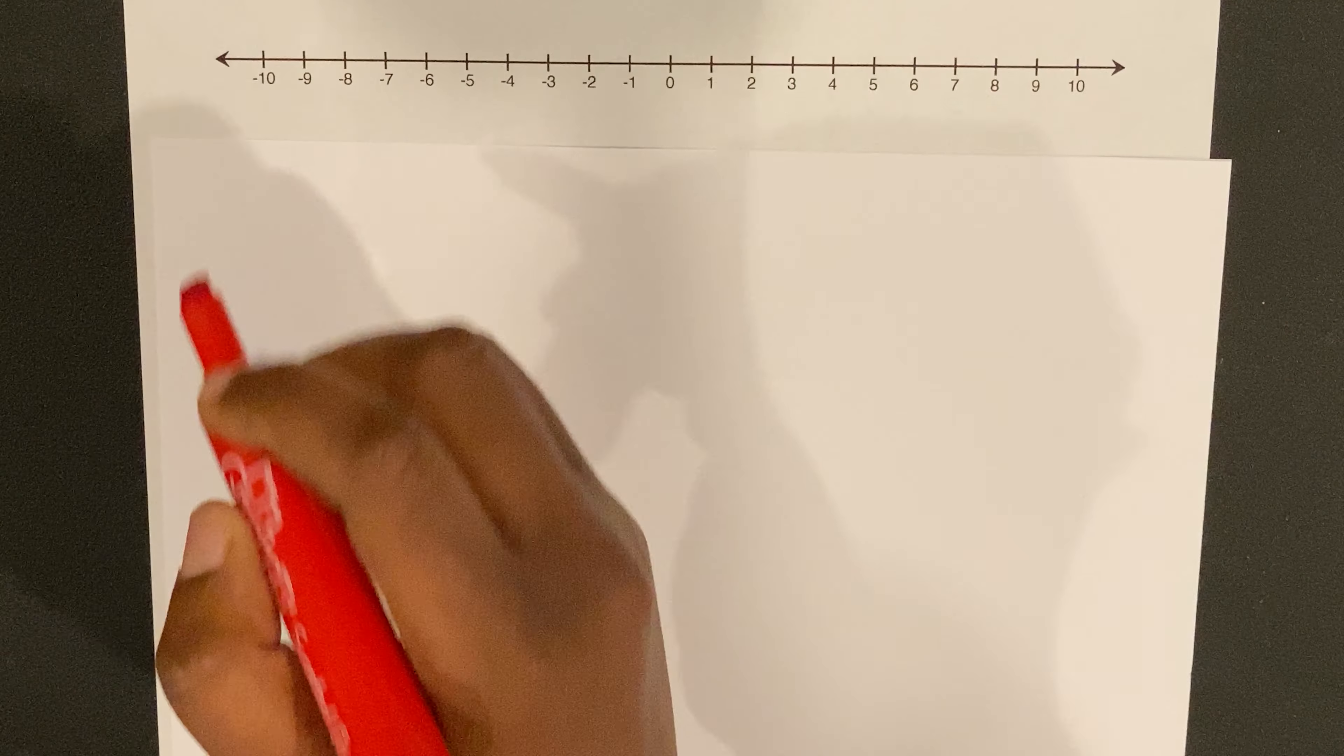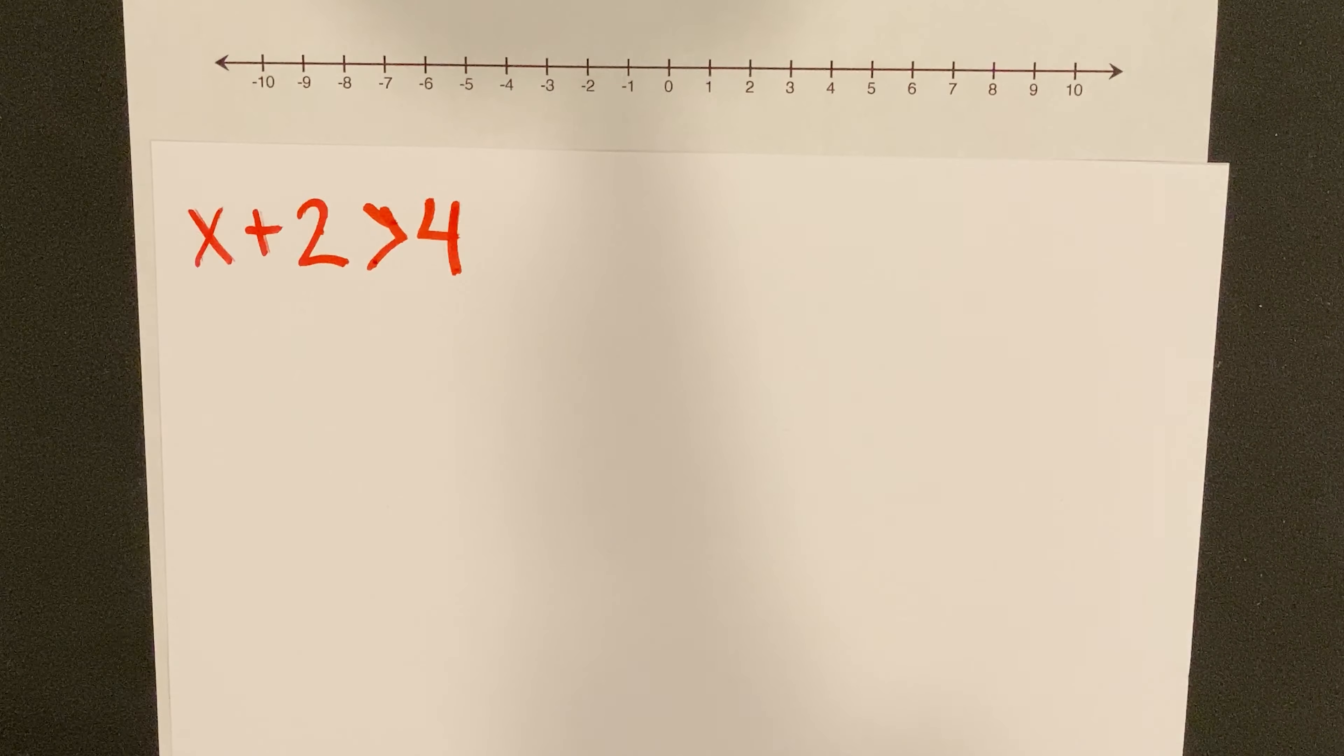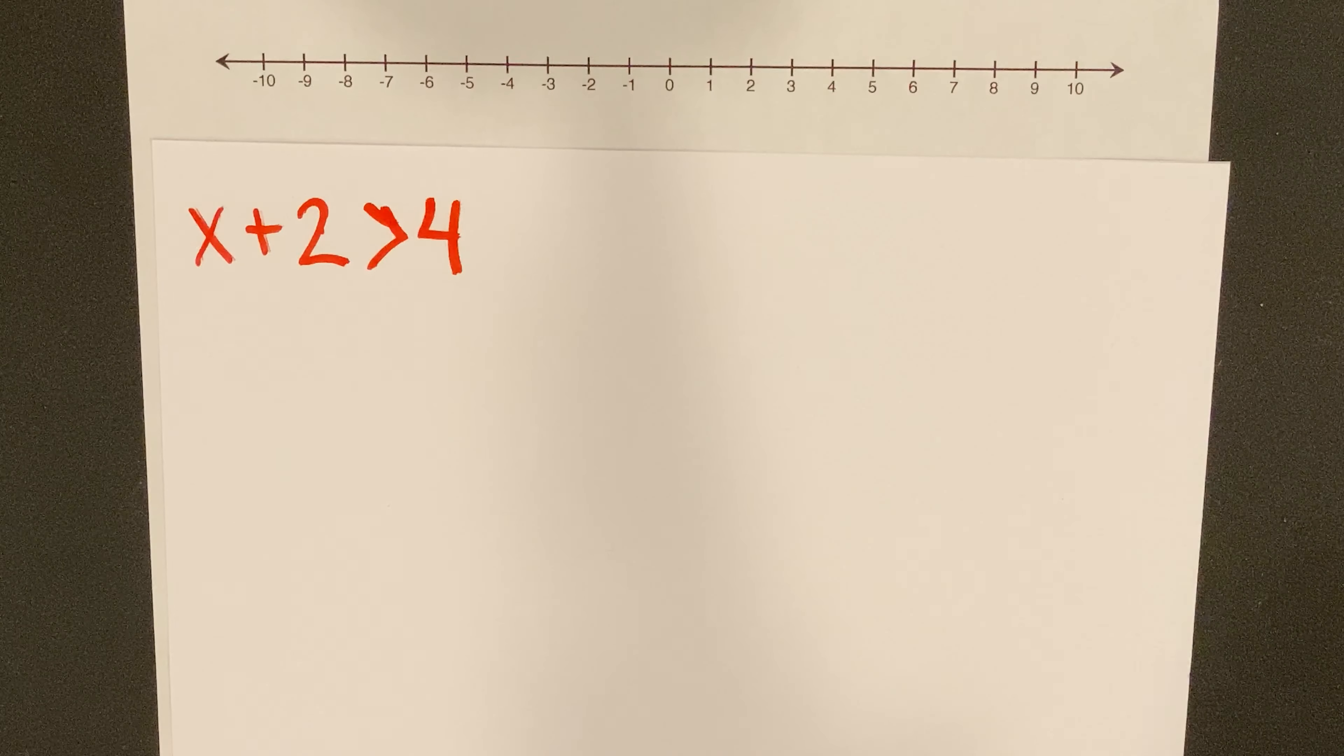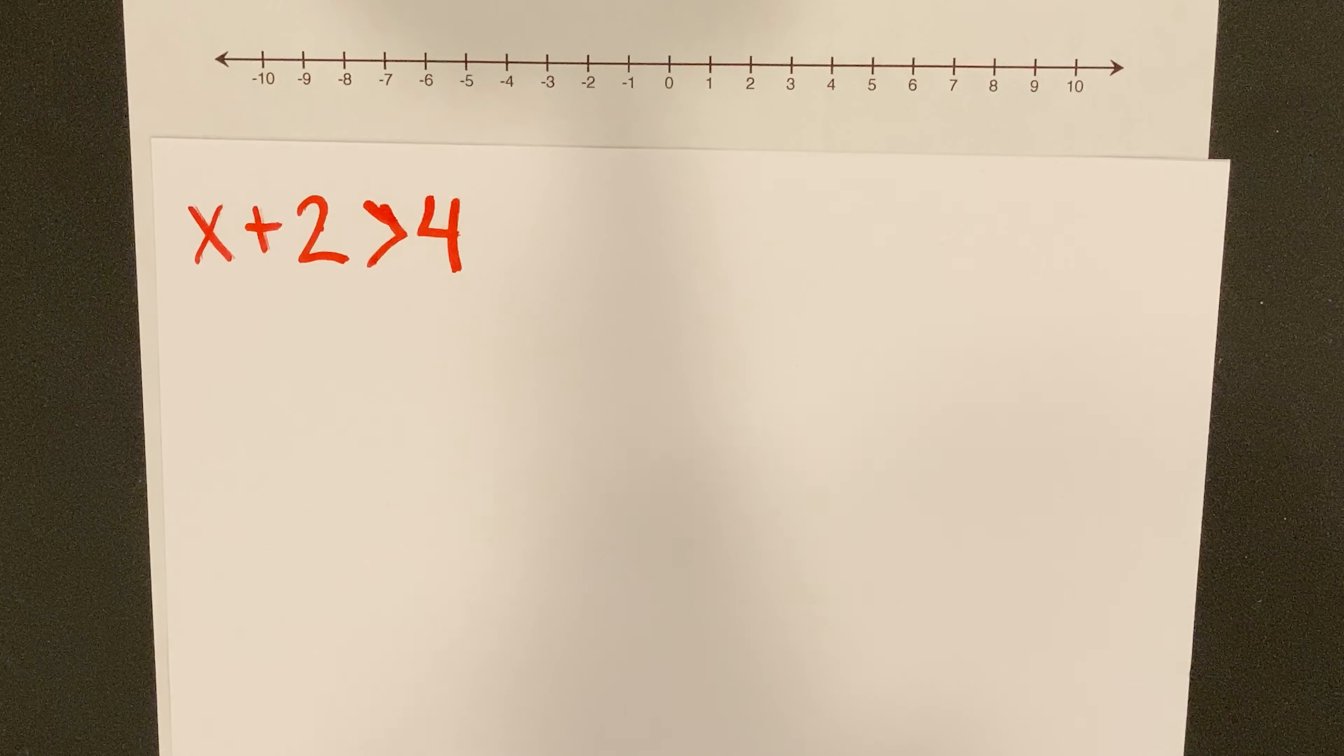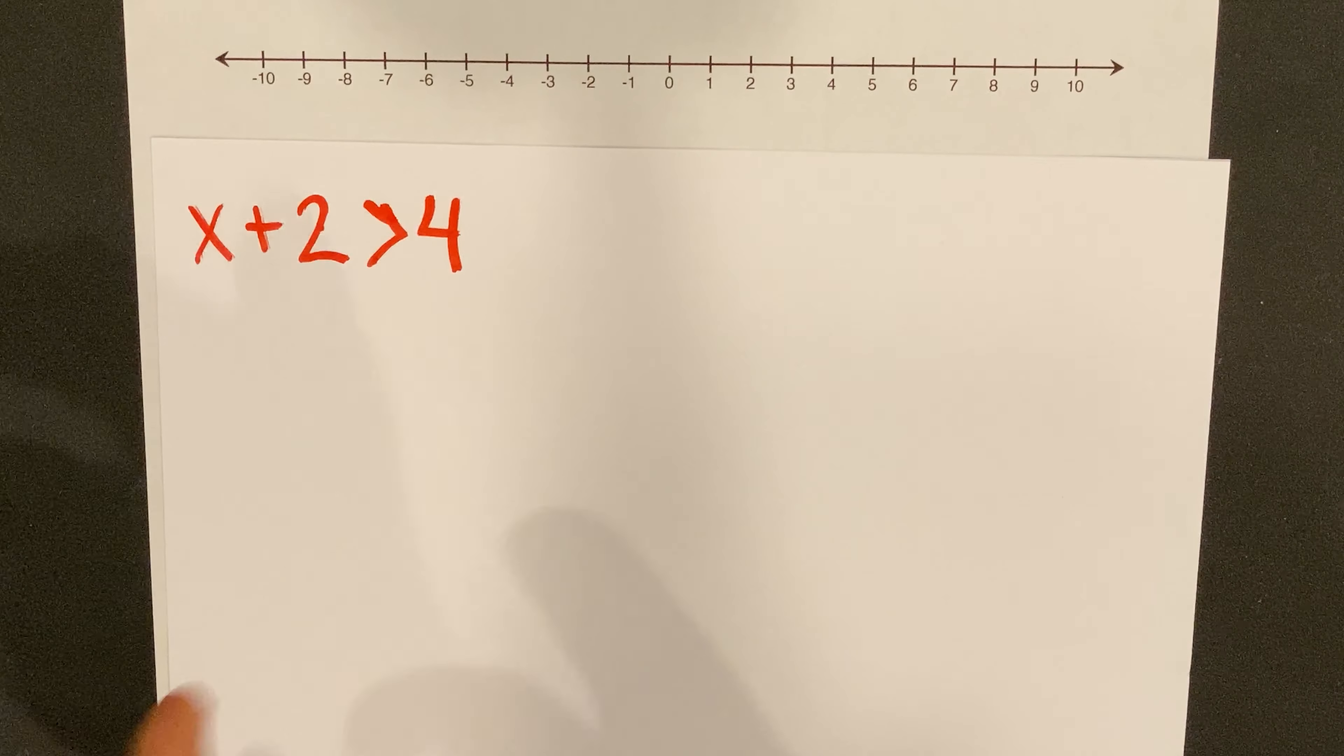All right, so the first problem we're gonna do is x plus 2 is less than 4. One of the things I want you to remember is when you are doing a one-step inequality, it is the same thing as if you were doing a one-step equation. The steps are still the same. You are still adding or subtracting, multiplying, you're still doing the inverse. That does not change. There is something that is going to change, however. I'll explain that after.